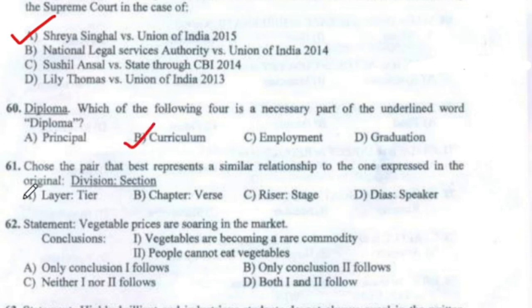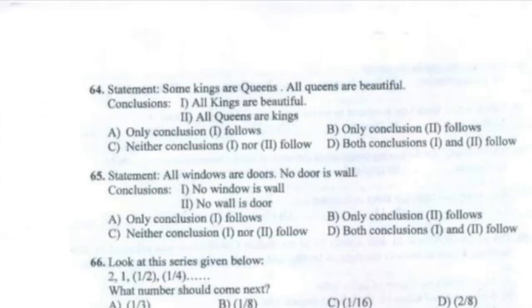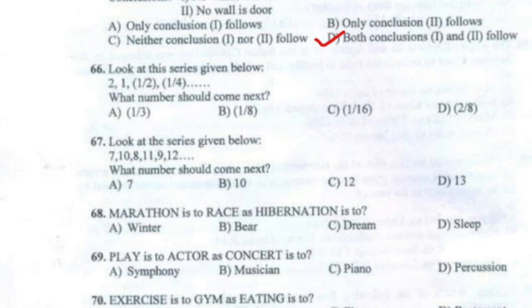Questions 61 through 66: Question 61 — Option A. Question 62 — Option C. Question 63 — Option B. Question 64 — Option C. Question 65 — Option D. Question 66 — Option B.